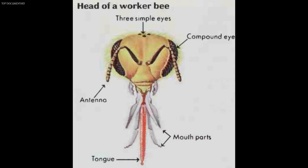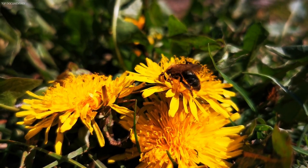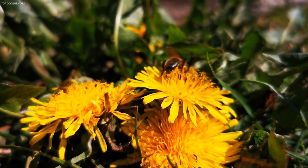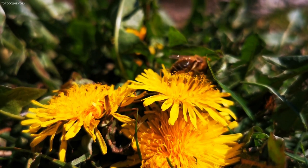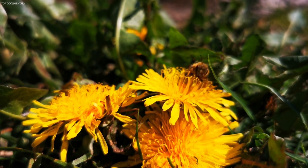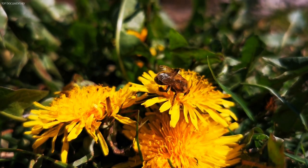A bee has five eyes: three small ones that form a triangle on top of its head, and a large compound eye on each side of its head. Each compound eye has thousands of lenses crowded closely together. Bees cannot focus their eyes because they have no pupils. Honey bees were the first insects known to be able to distinguish colors. Bees have three kinds of color-sensitive cells in their eyes, especially sensitive to blue, yellow, and ultraviolet rays, which humans cannot see. However, bees cannot distinguish red — to them, it blends in with green.